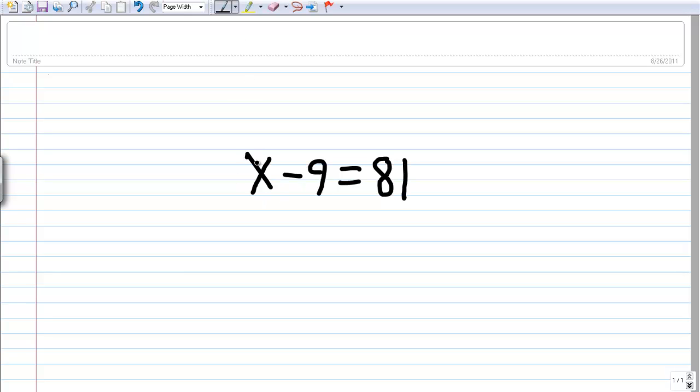What we want to do is, once again, find the value of x, and the best way to do this is to isolate x on one side of the equal sign. What we want to do to get rid of this minus 9 is to add 9 to the side. This will cause this 9 to cancel out that 9, and we will end up with x is equal to 90, which is our answer.